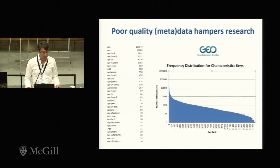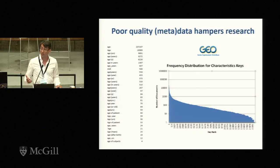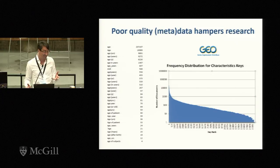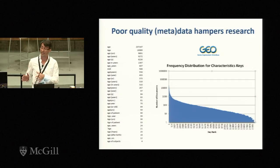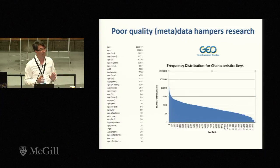This is well exemplified by looking at Gene Expression Omnibus and some of the characteristic fields used to describe the tissues of samples that were analyzed. One field might be the age of the sample, and there are at least 31 different ways to specify age. Not even looking at the values in the value field — which can be not only numeric but all kinds of literals — it's just the wild west of anybody gets to put anything they want to describe their samples.